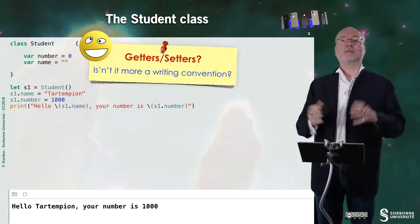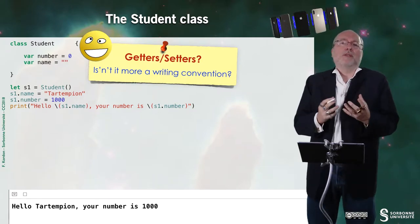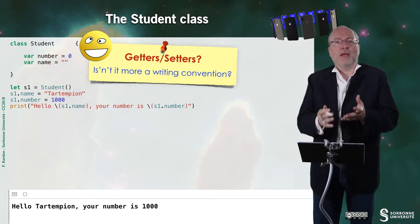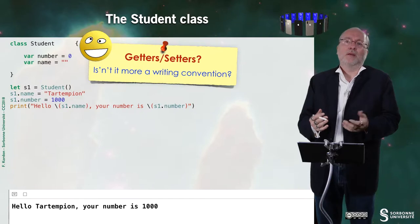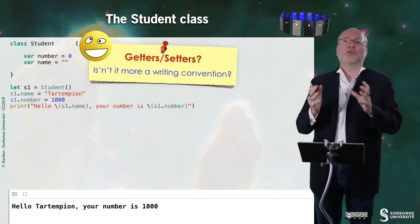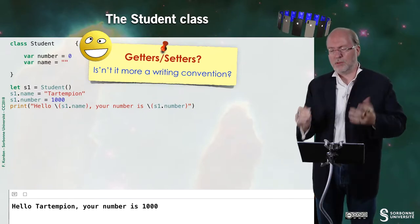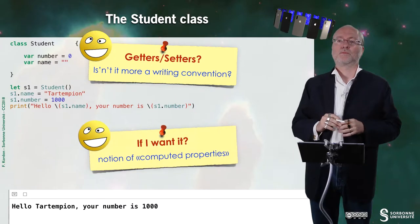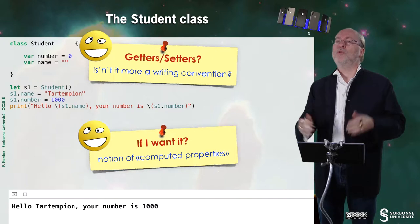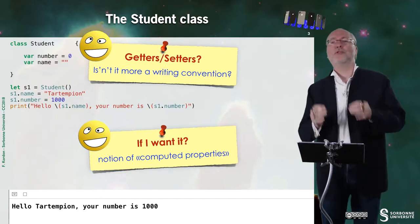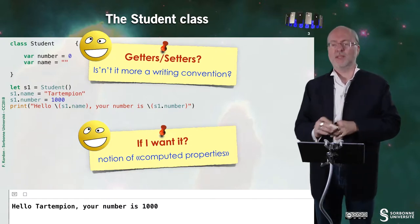Now, getters and setters, it's more a writing convention, so you don't have them explicitly. Of course, you can write them. But once again, this notion is basically a convention. And if I wanted, I can also work on the notion of computed properties. We will see that later.